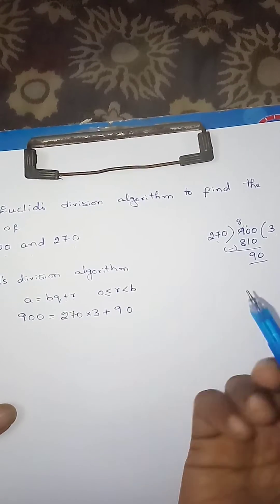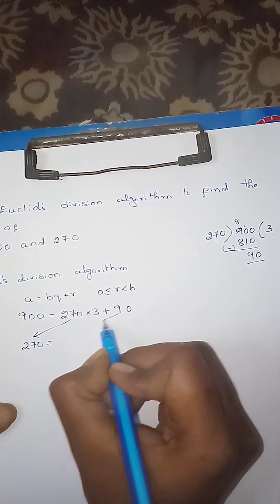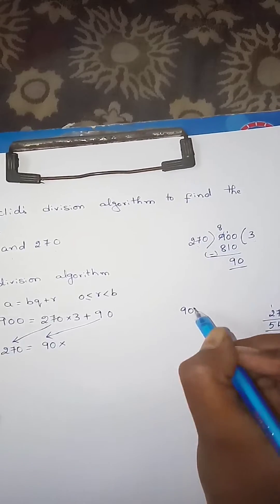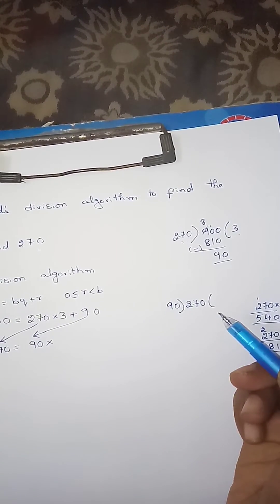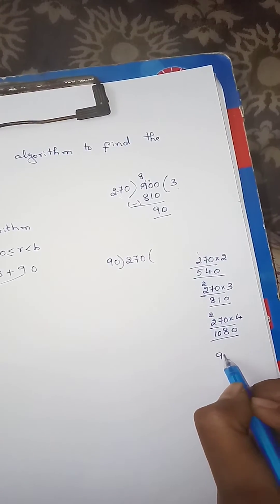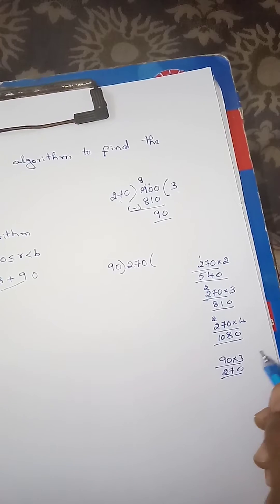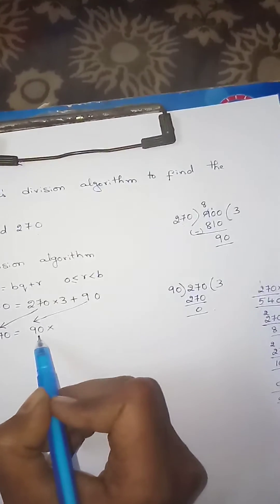Now the next case: divisor becomes the same thing. 90 equals 270 divided. If you do this, 270 divided by 90, quotient is 3. Working: 2.7, 270, and 90. Quotient is 3, remainder is 0.